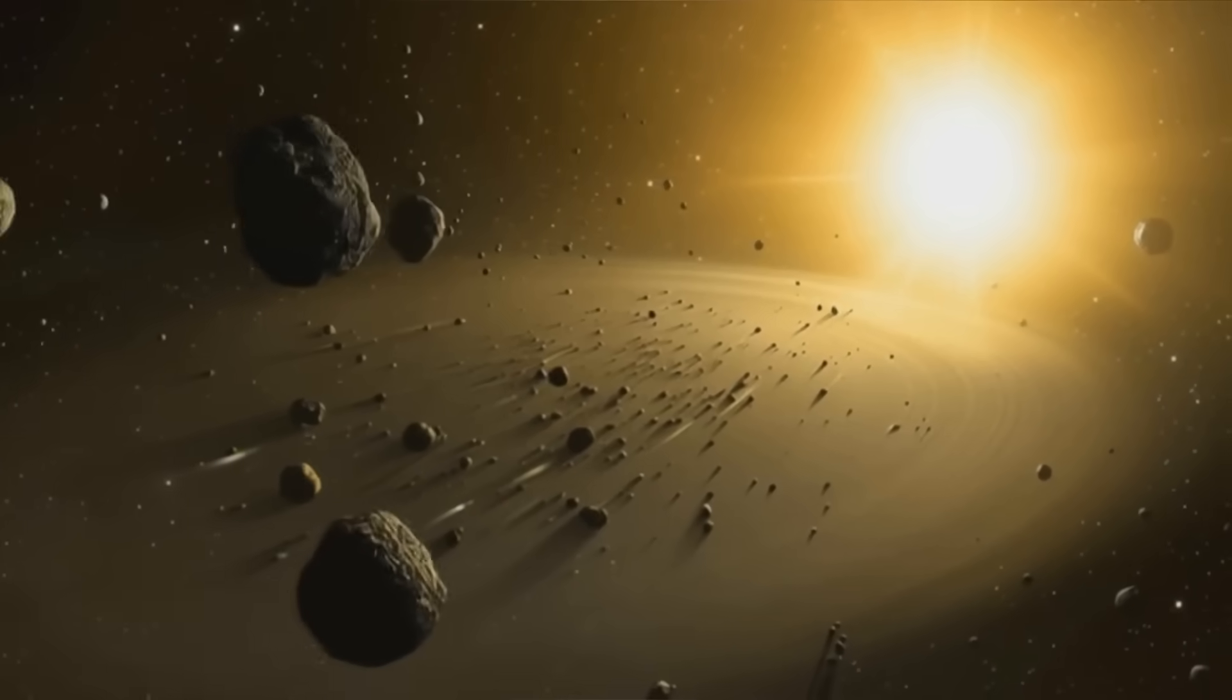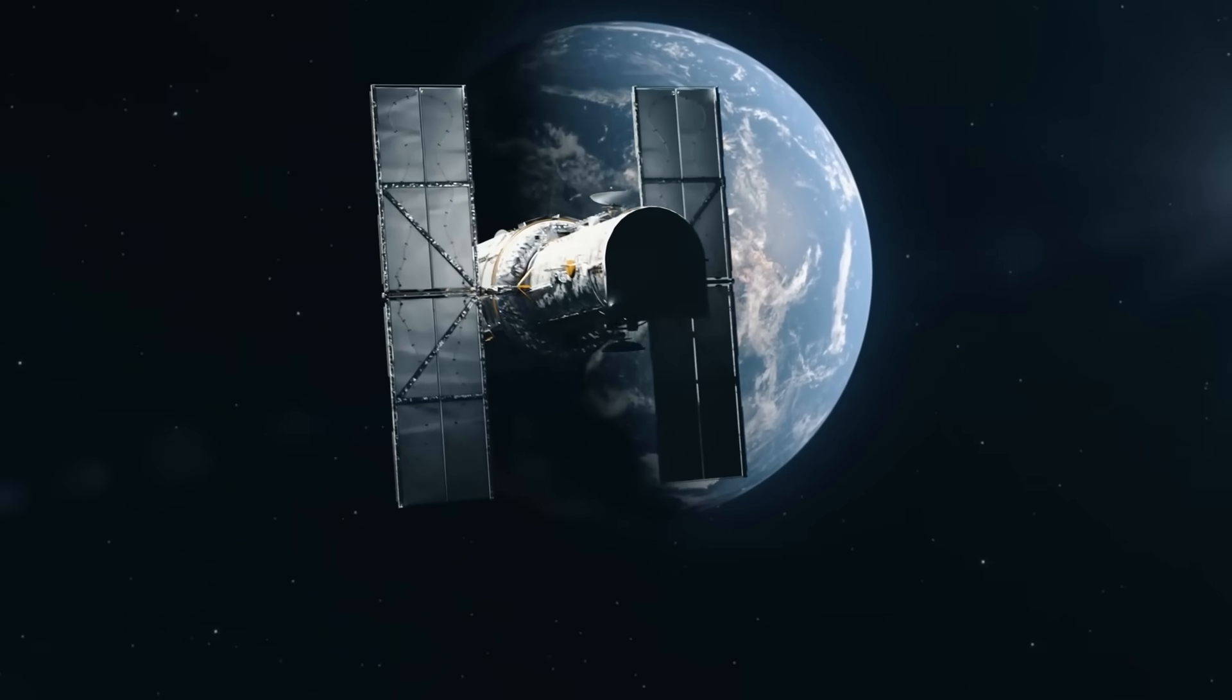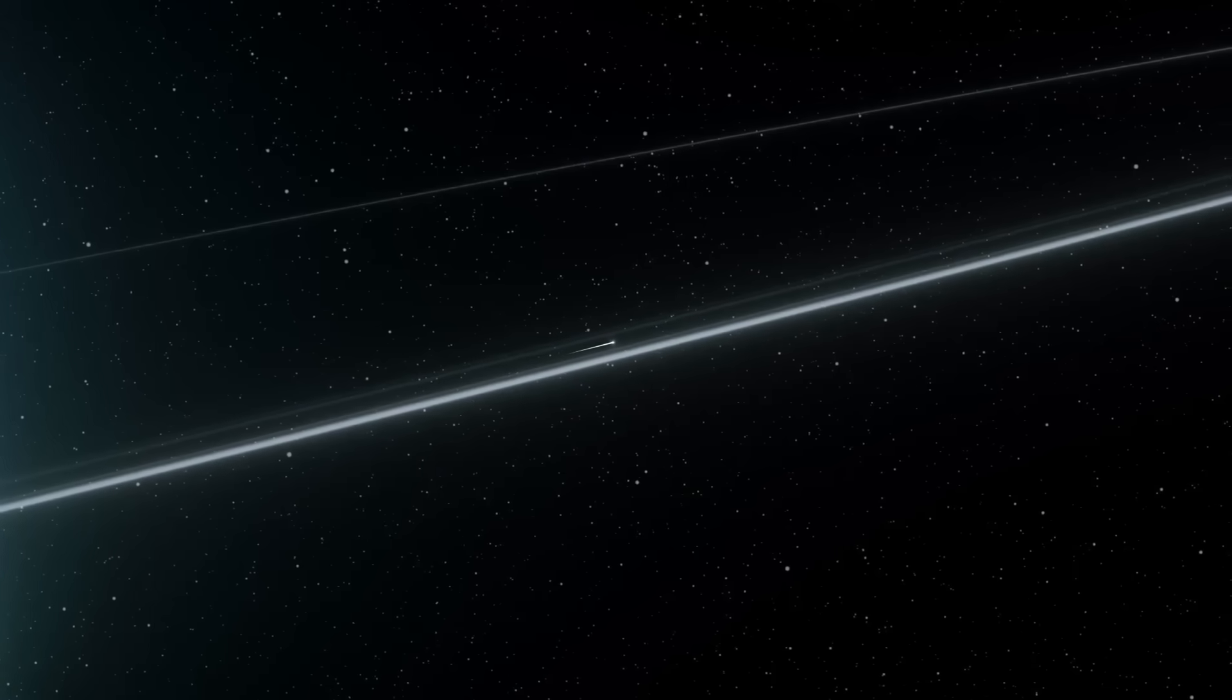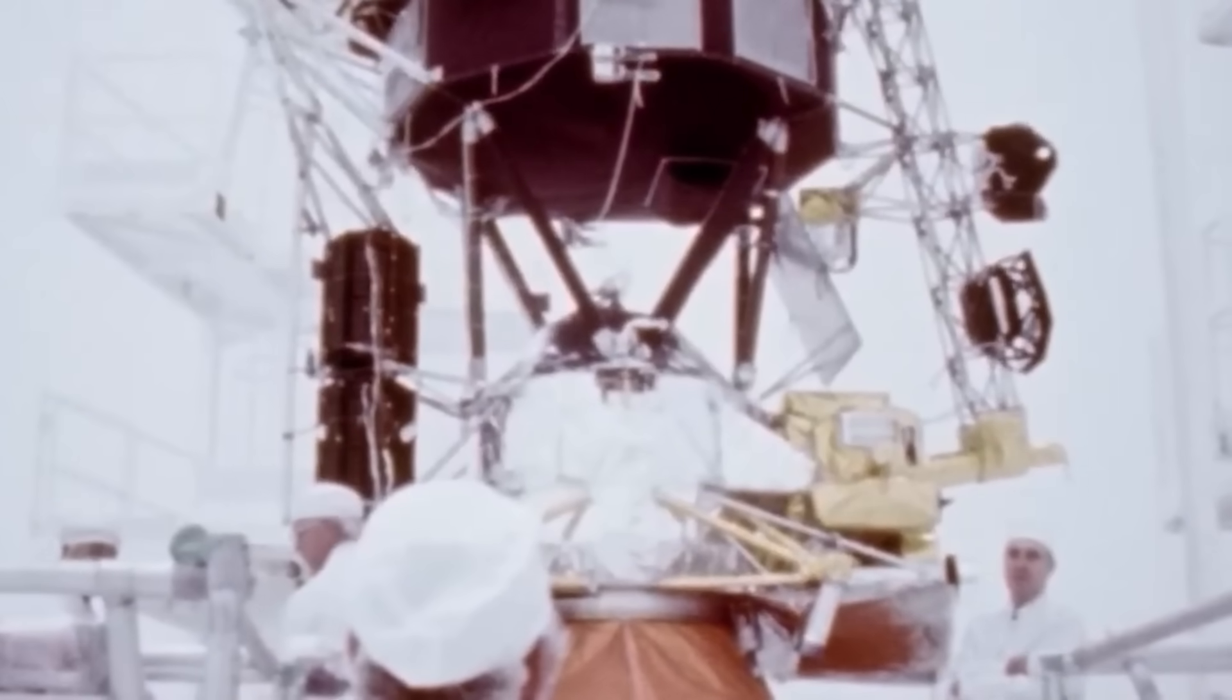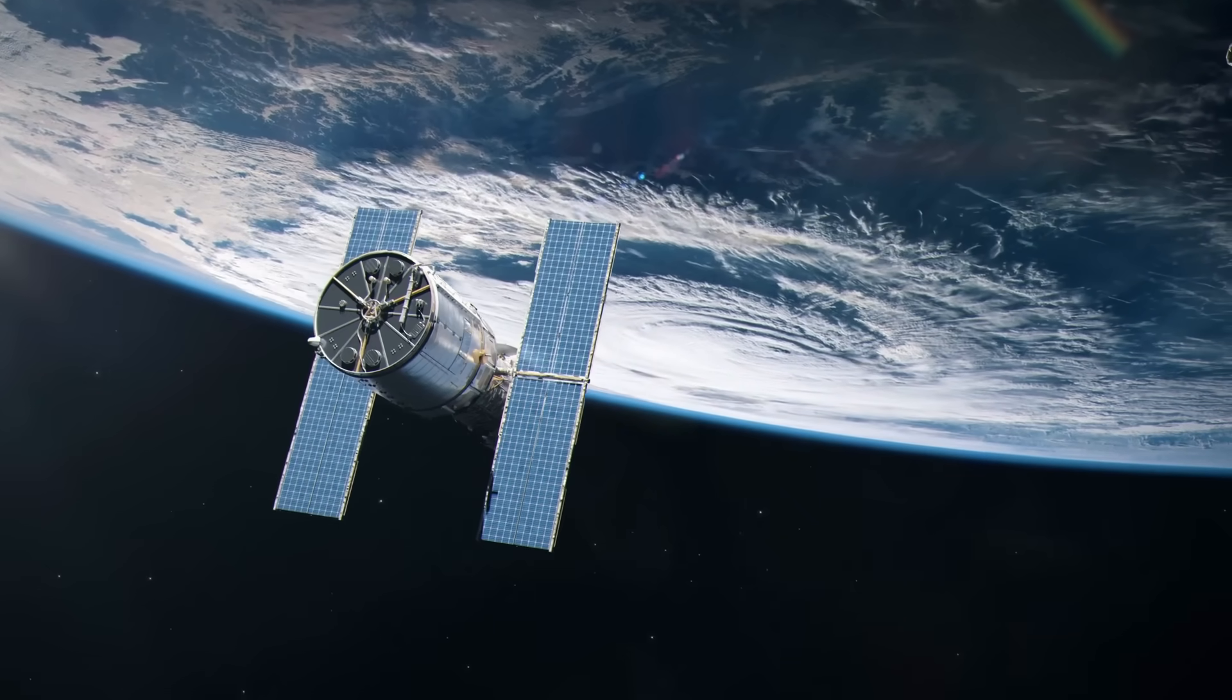There is a final, deeply humbling asymmetry revealed by Voyager 1. We can send machines outward far faster than we can send understanding with them. A spacecraft can leave the solar system in decades. It can survive for generations. But interpretation lags behind.